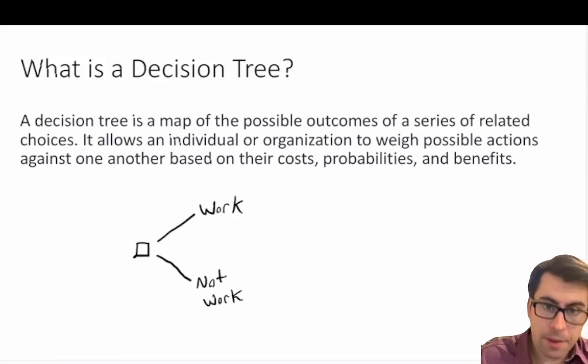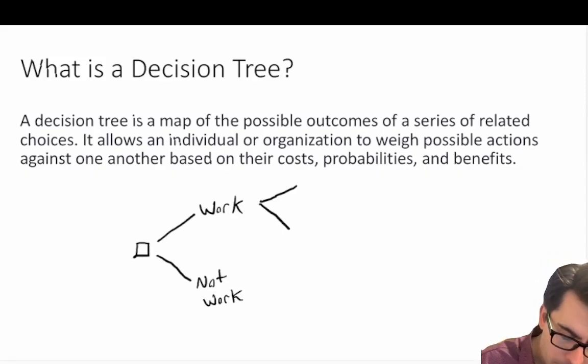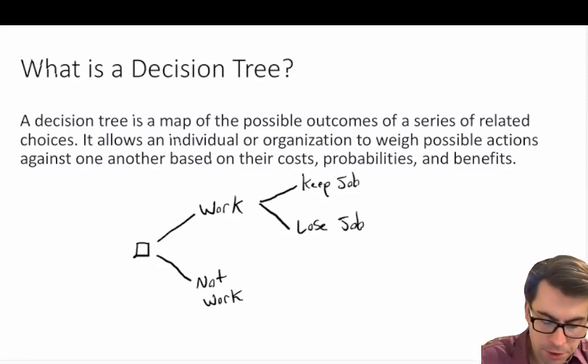Now at the point where we are at work, we call this a chance node because in this hypothetical example there are two possible outcomes. If you go to work, you either are going to keep your job or you're going to lose your job. Maybe you've had a bad day and you lost your job.